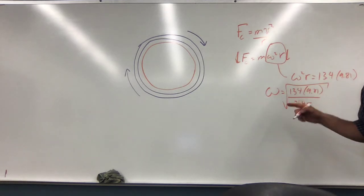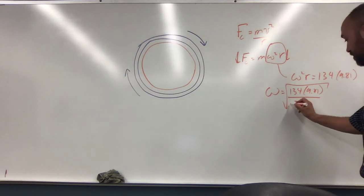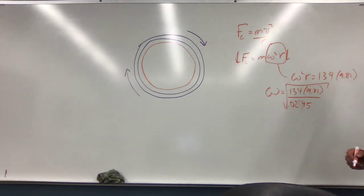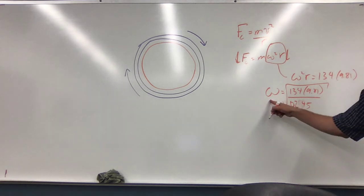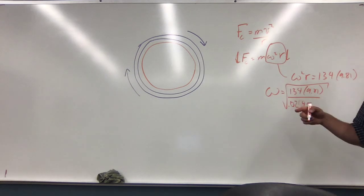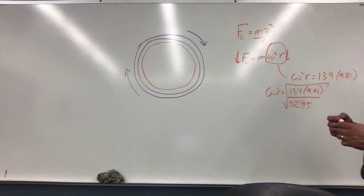Except that you need meters. So, this would be 0.0245. Okay. And that would be, that answer would be in radians per second, but you need revolutions per minute. Because that's what the question asks.